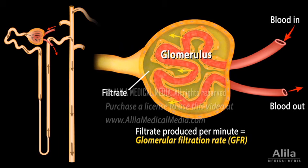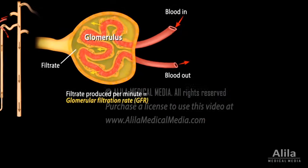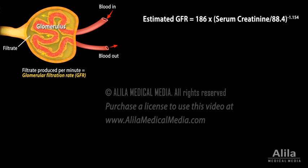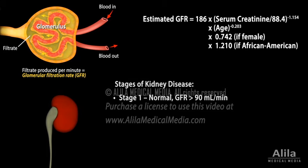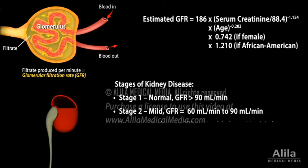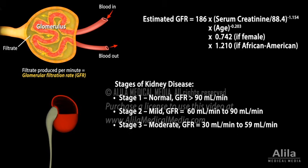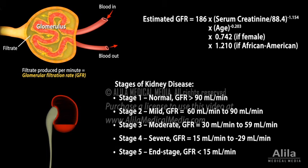GFR is, however, difficult to measure directly. In practice, it is usually calculated as a function of serum creatinine. The formula takes into account the patient's age, gender, and race. A normal GFR is greater than 90 mL per minute. A GFR below 60 is a sign of reduced kidney function, and a GFR smaller than 15 represents end-stage renal disease, for which dialysis or a kidney transplant is required.